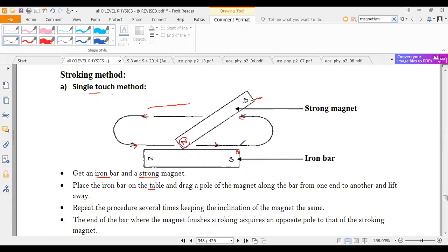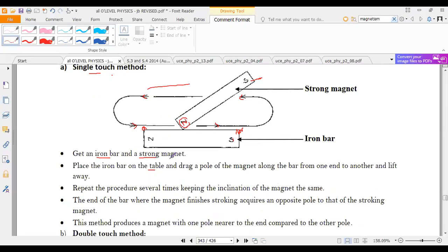If you are leaving this bar from this point and this is north, then this will be south, and the position where it starts striking from will become a north pole.